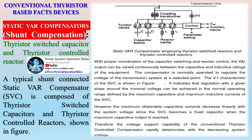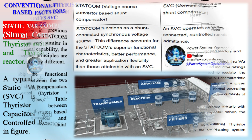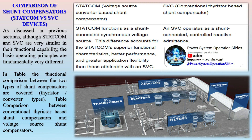There are two distinctly different approaches to the realization of FACTS devices: the first is based on conventional thyristor technology, and the second is by using voltage source converters. The different types of FACTS devices that are available are: 1. Thyristor controlled reactor (TCR), 2. Thyristor switched reactor (TSR), 3. Thyristor controlled capacitor (TCC), 4. Thyristor switched capacitor (TSC).